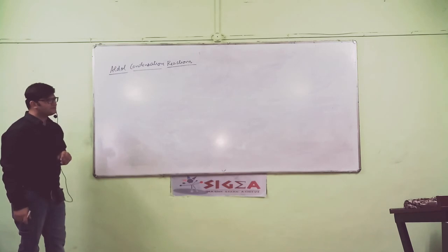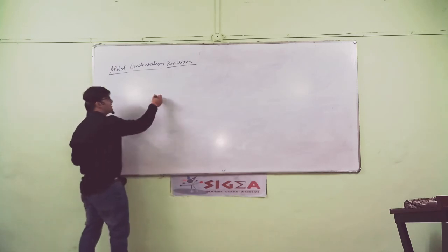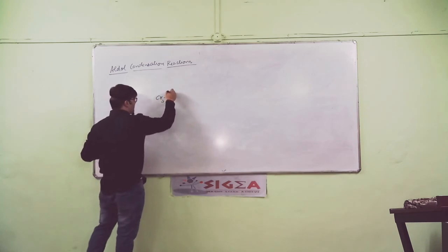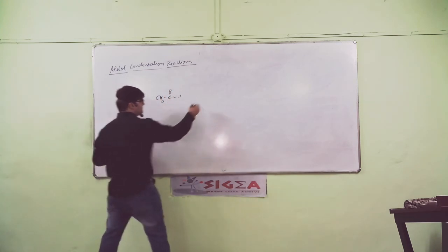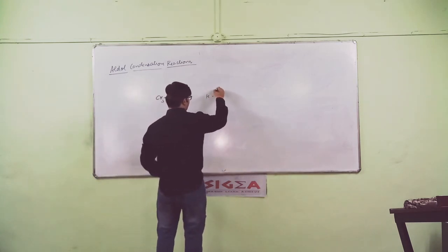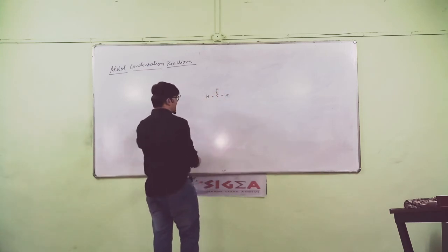Let's say aldol reaction is responsible for compound formation. This is a simple compound: CH3, C double bond O, H. Then we have H, C double bond O, H. This is called acetaldehyde, and this is called formaldehyde.